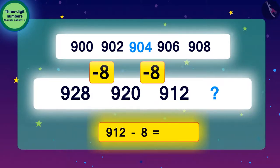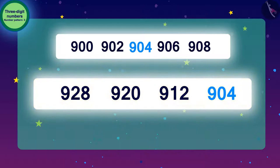Now, the number pattern is ready. And the answer to our code is got by subtracting 8 from 912, that is 904. Our second pattern is also complete.